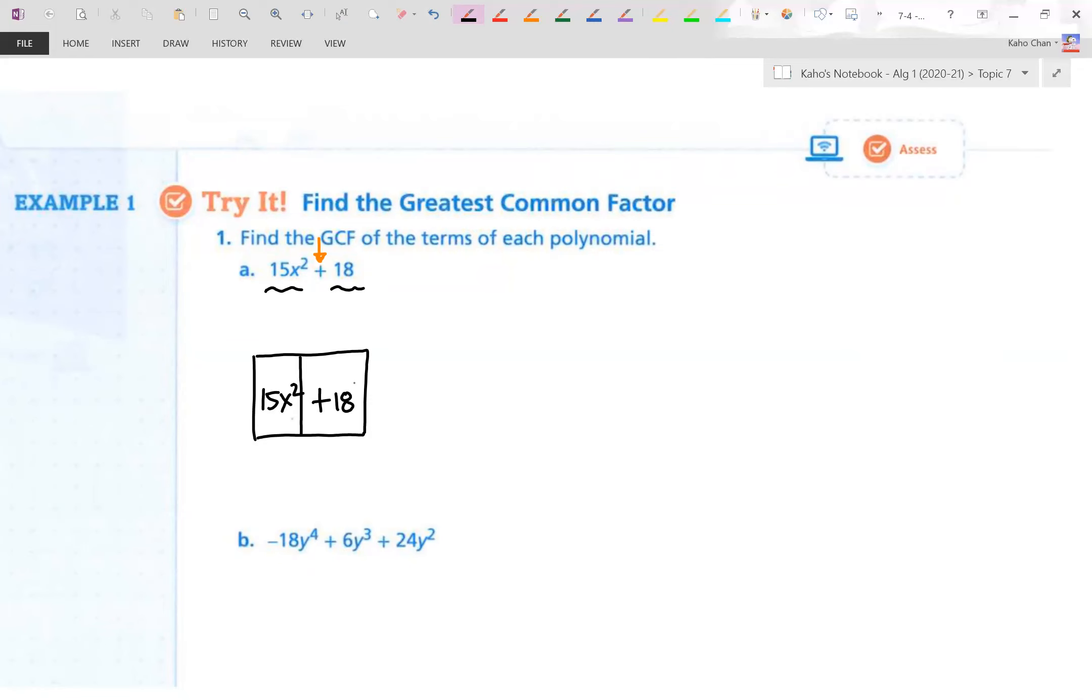Let's break down 15x squared. 15 first is the coefficient. That's 3 times 5. Those are prime factors. Even x squared gets broken down as well, xx. Great. That worked for the first half. Second half, 18 can be broken down, 2 times 9. 9 can be broken down 3 and 3.